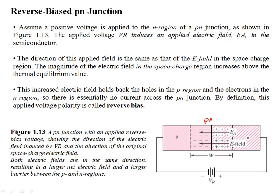In a PN junction with the applied external electric field due to battery Vr, the connections are such that the N-type region of the semiconductor is connected to the positive terminal of the battery, and the P-type region is connected to the negative of the battery Vr. You already have a depletion or space-charge region established due to the uncovering of positive donor impurities in the N-type region and negative acceptor impurities in the P-type region.